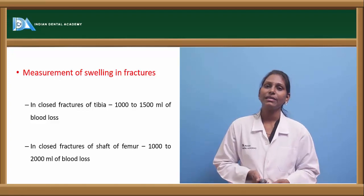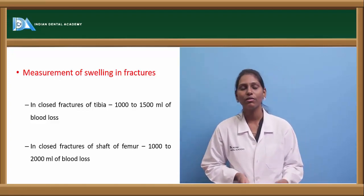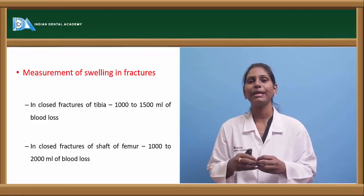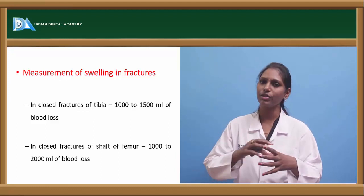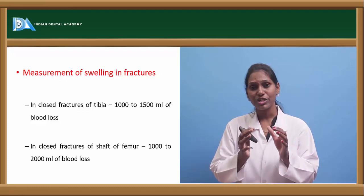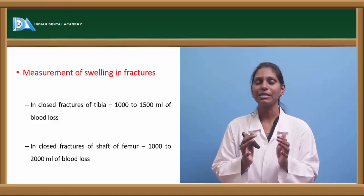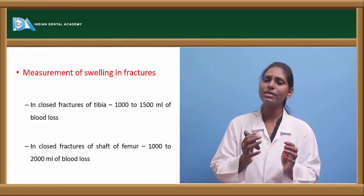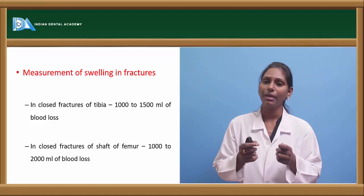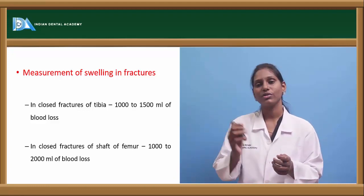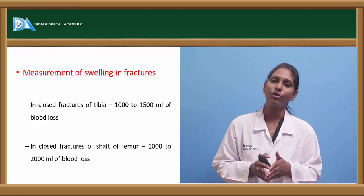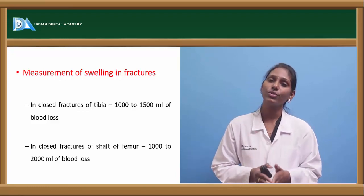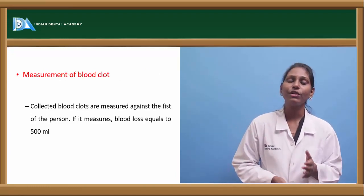In internal fractures with no external blood loss, blood pools into extracellular spaces. By measuring the amount of swelling, we can estimate blood loss. In closed fractures of the tibia, blood loss is approximately 1000 to 1500 ml; in closed fractures of the shaft of femur, it is approximately 1000 to 2000 ml.